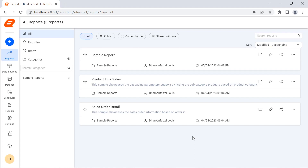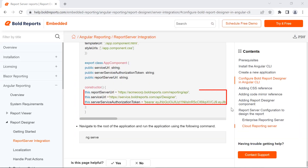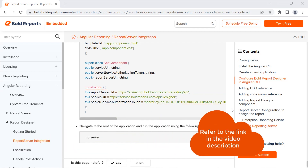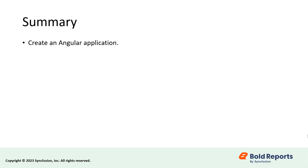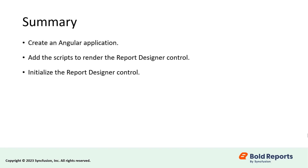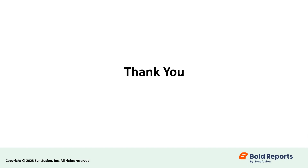In this demo, I showed you how to embed the report designer from the enterprise report server. You can also embed the report designer from the cloud report server — I have provided the documentation link in the video description. In this video, I have shown you how to create an Angular application, add the scripts to render the report designer control, and initialize the control. There's a link to the documentation with the steps in this video. If you found this video useful, don't forget to click the like button and subscribe to our channel to watch more videos like this. Thanks for watching.